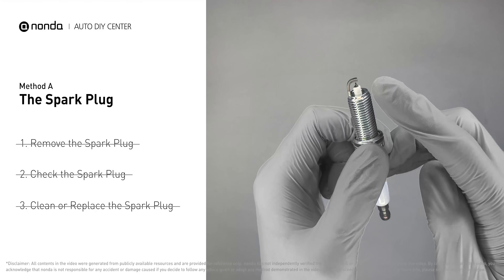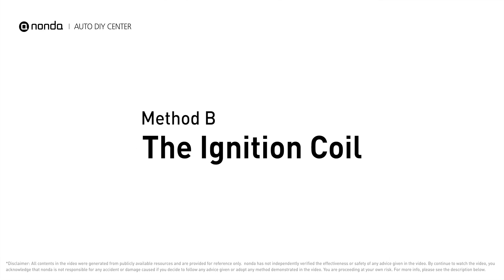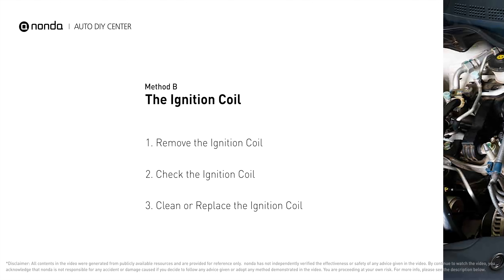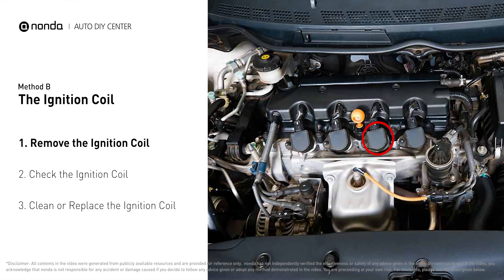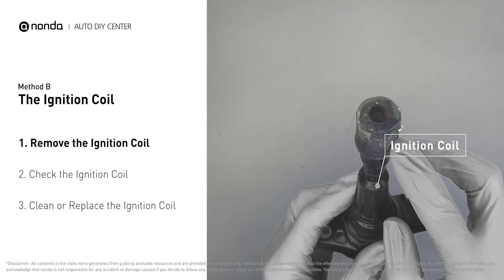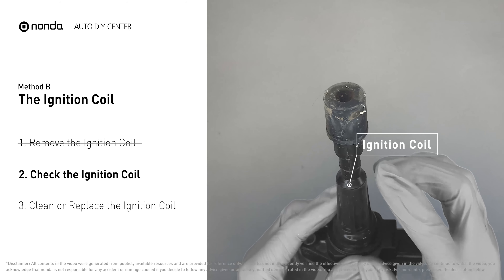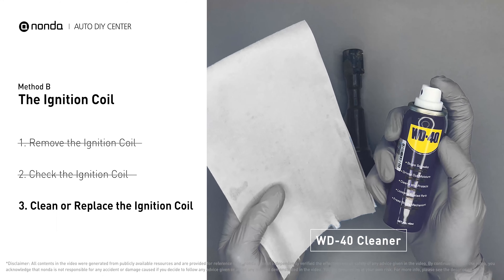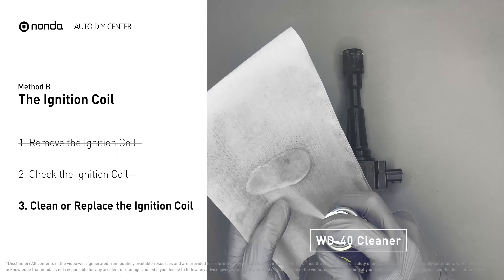Method B: the ignition coil. Ignition coils are usually installed directly at the cylinder head above the spark plug. First, carefully remove the ignition coil from the engine. Check to see if the ignition coil is either stained or damaged.